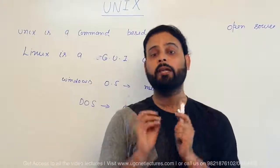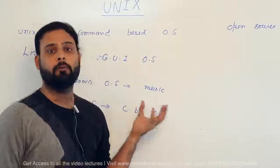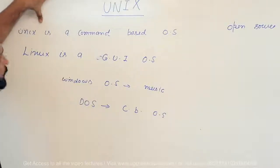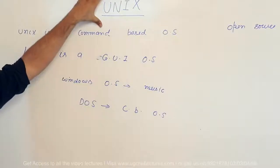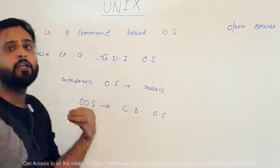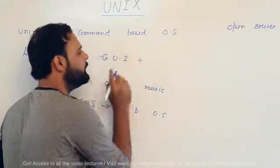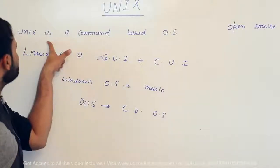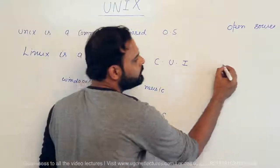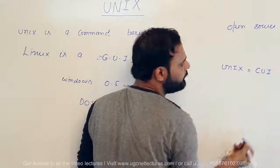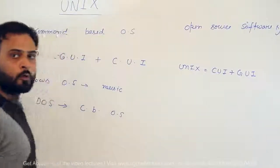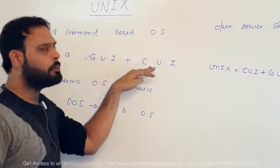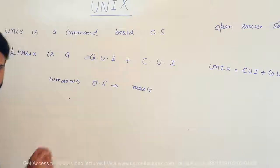UNIX is a very great and big operating system. The first invention was based on UNIX, and UNIX is completely command-based with no graphical user interface. Linux, on the other hand, is GUI-based but also supports a command user interface. In the current scenario, UNIX is also available with both command user interface and graphical user interface. So both UNIX and Linux provide both facilities — GUI as well as command-line interface.